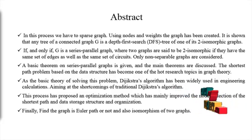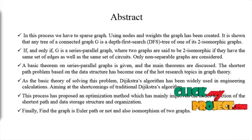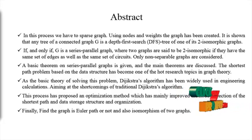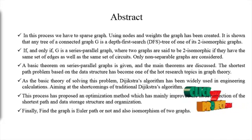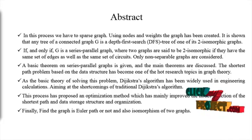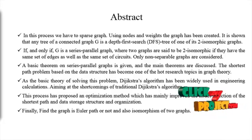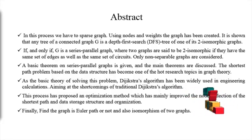A graph may be undirected, meaning that there is no distinction between the two vertices associated with an edge, or its edge may be directed from one vertex to the other. Graphs are one of the prime objects of study in discrete mathematics.